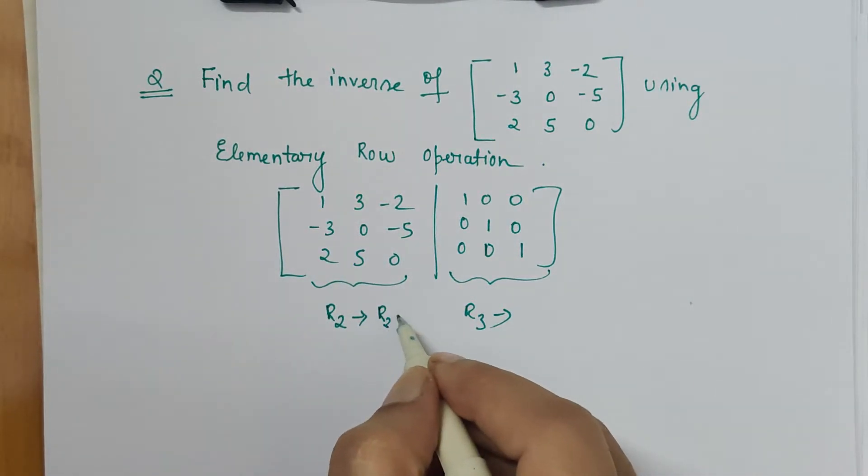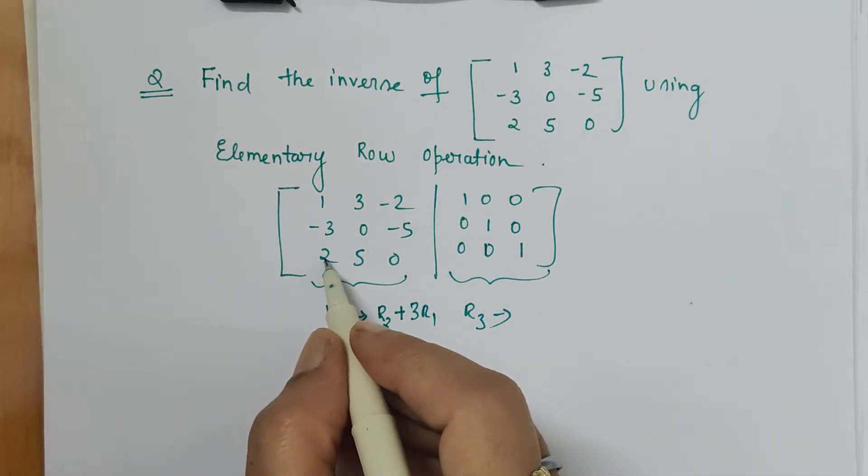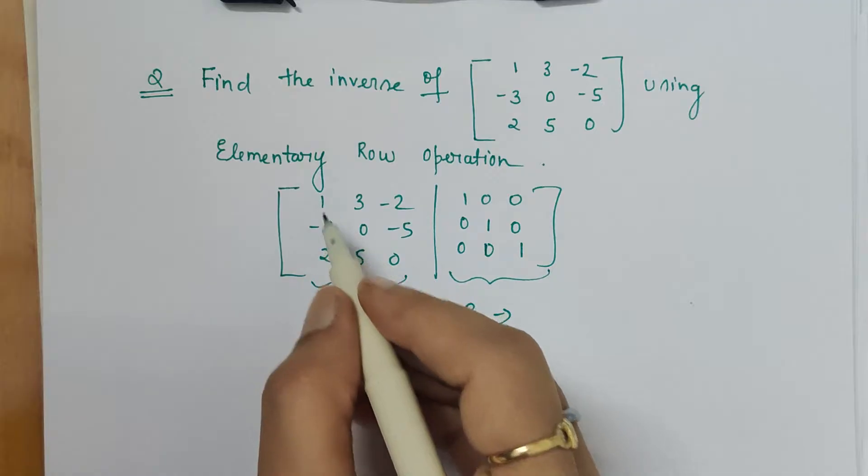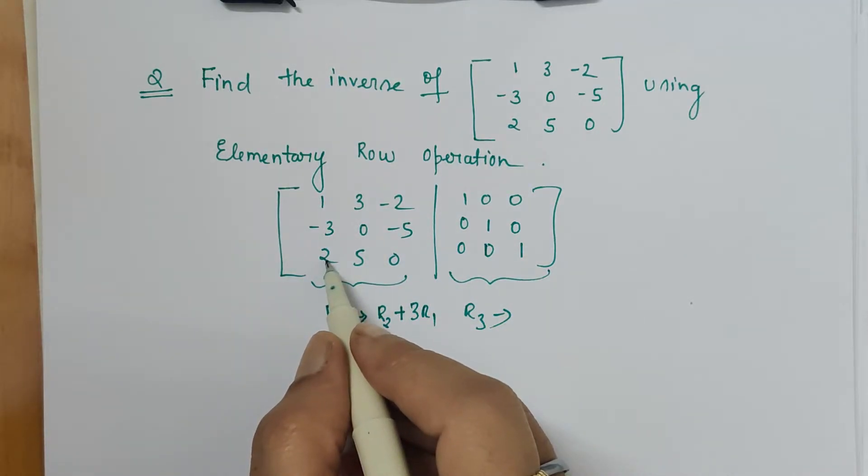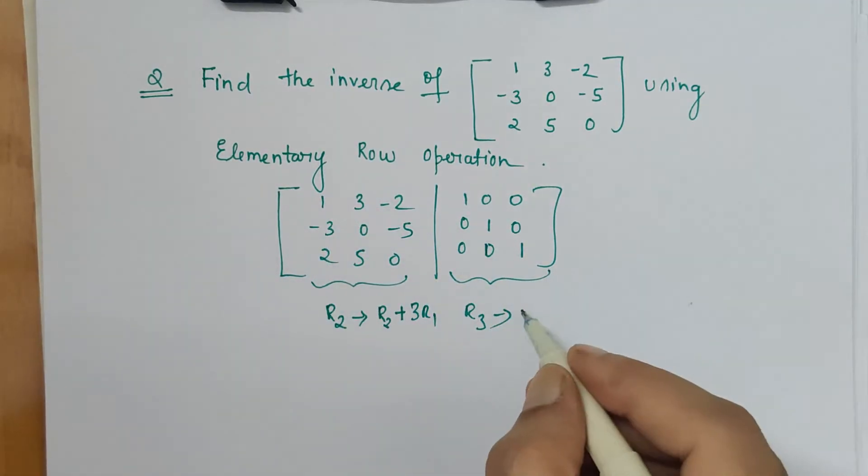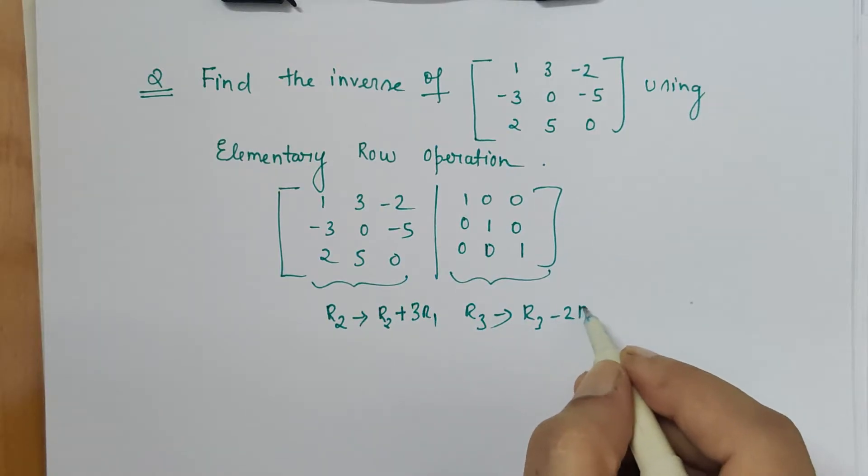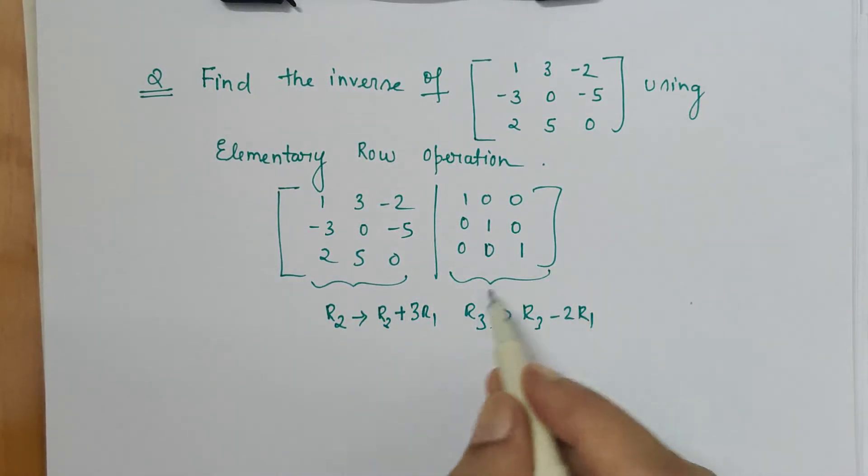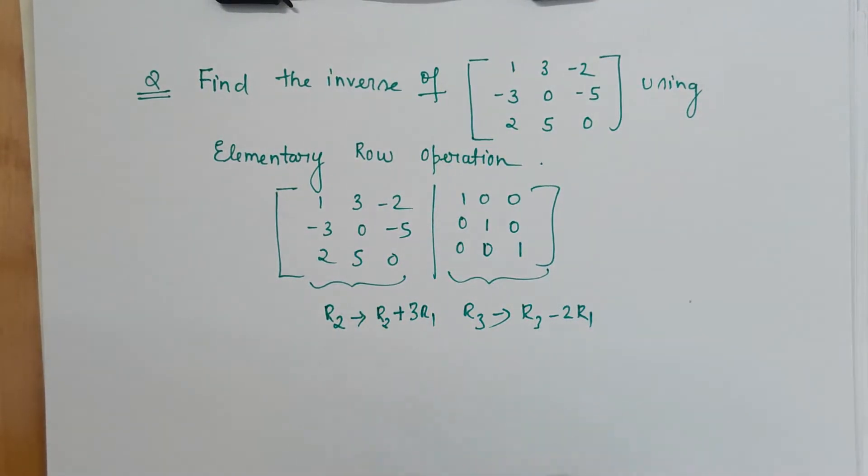So minus 3 plus 3 times the element of first row. So R2 plus 3R1. Similarly, how we can make this as 0? 2 minus 2, that means R3 element minus 2 times R1 element. So R3 minus 2 times R1. Hope you will understand these operations from now on in the successive steps. I am applying it.